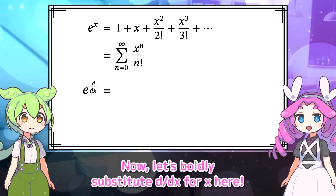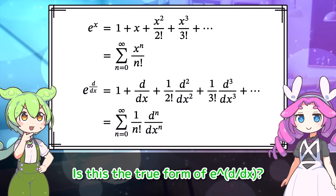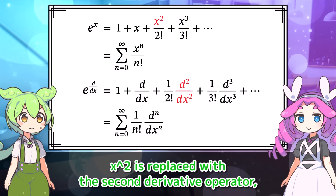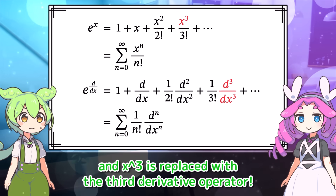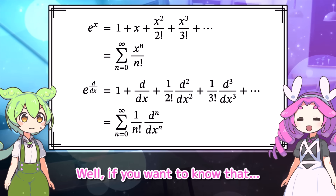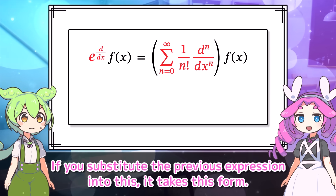Now let's boldly substitute D by DX for X here. Then we get... Is this the true form of E to the D by DX? I feel like we're doing something forbidden. Instead of X, D by DX is added; X squared is replaced with the second derivative operator, and X cubed is replaced with the third derivative operator. What does this expression even mean? Well, if you want to know that, you should apply E to the D by DX to a function F of X. If you substitute the previous expression into this, it takes this form.